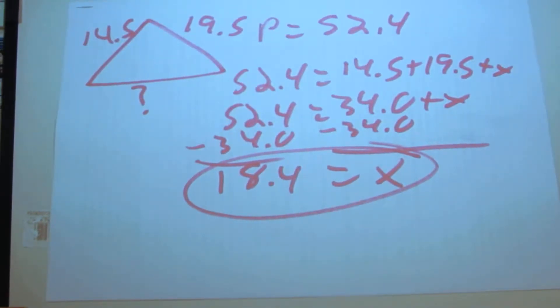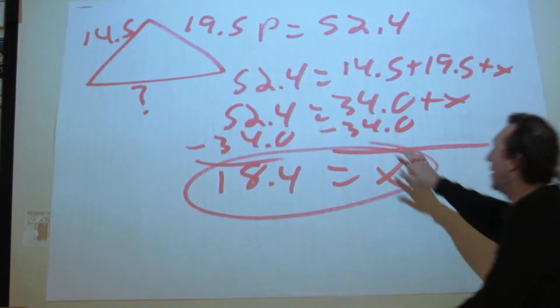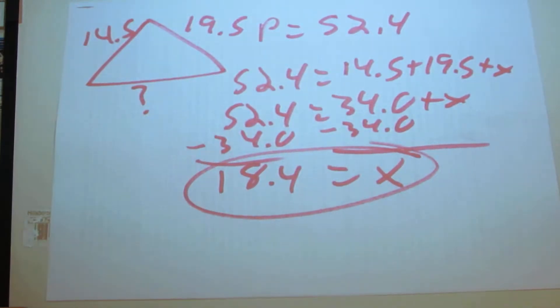Hello class, the battery ran out on the second to last example, so I'm just going to do those two. This will be part three. On this question, you're given a triangle with two sides, one of them is 14.5, the other is 19.5, and the perimeter is 52.4. You have to find the third side.